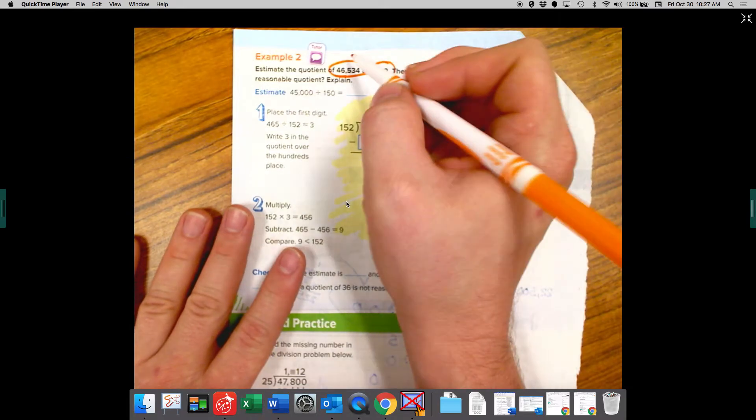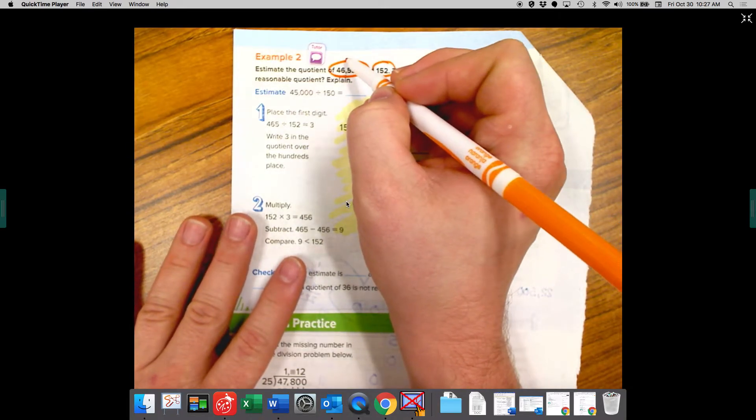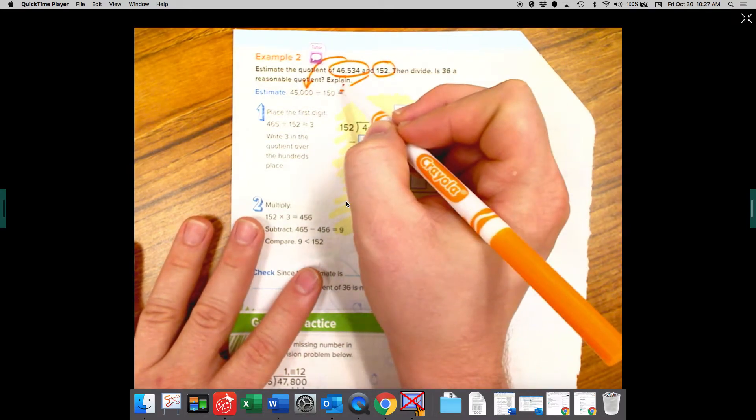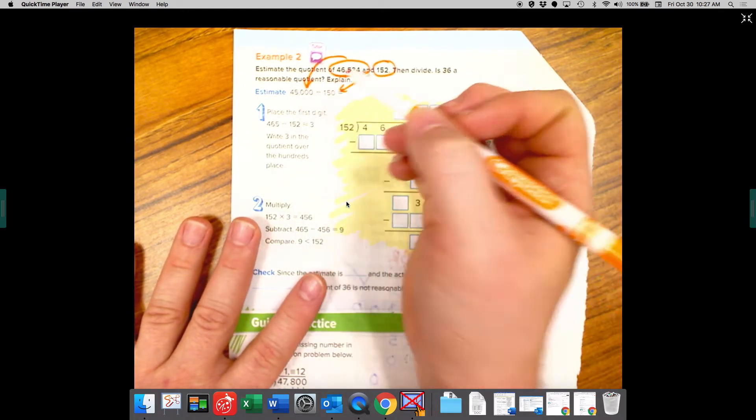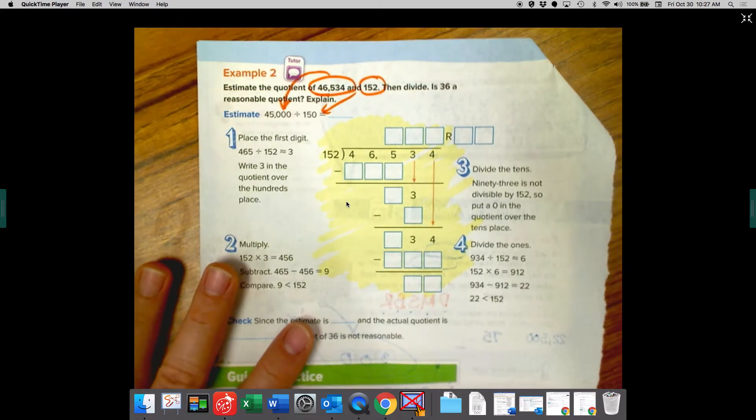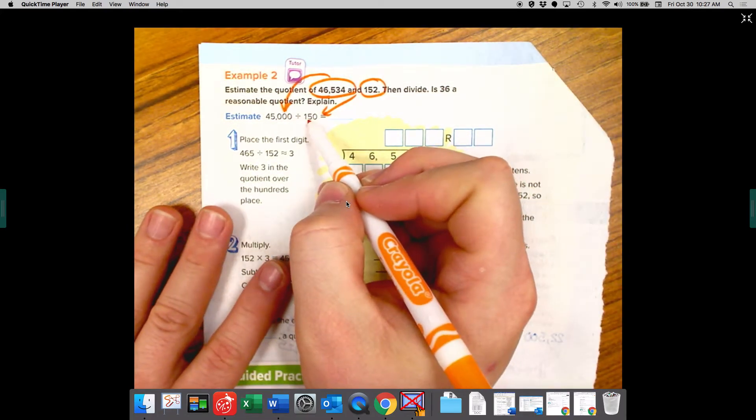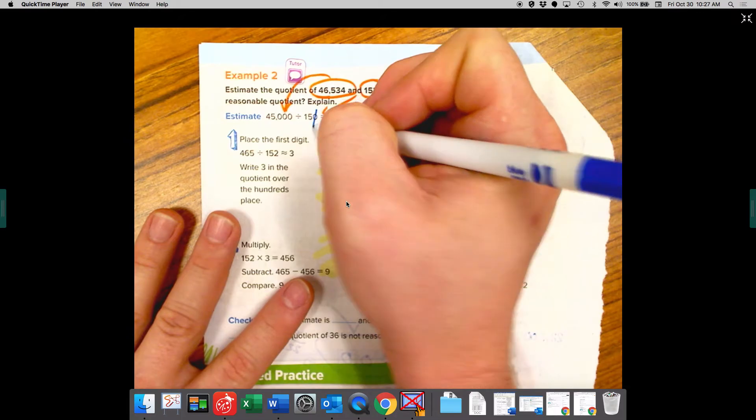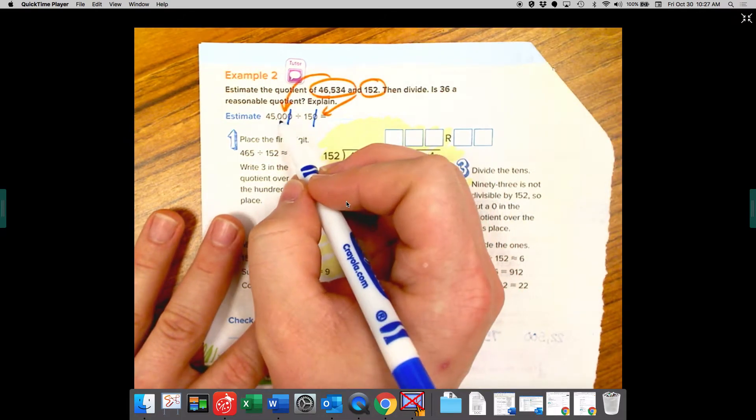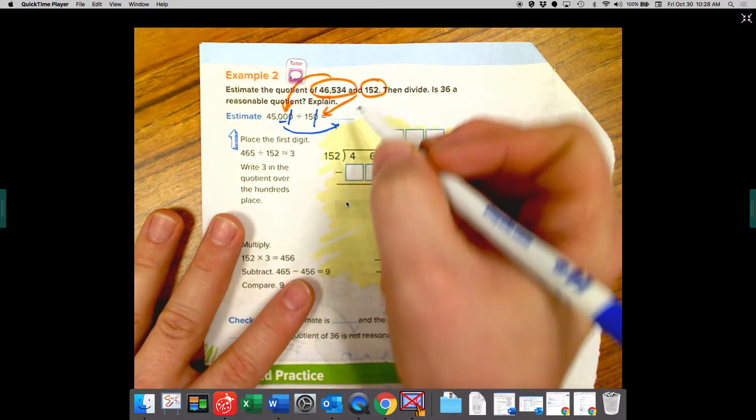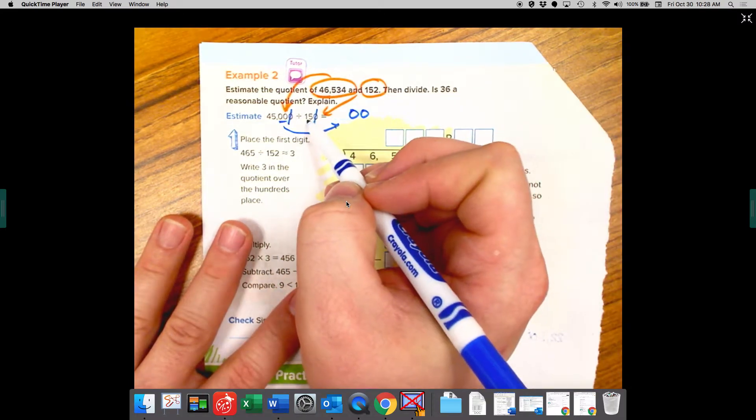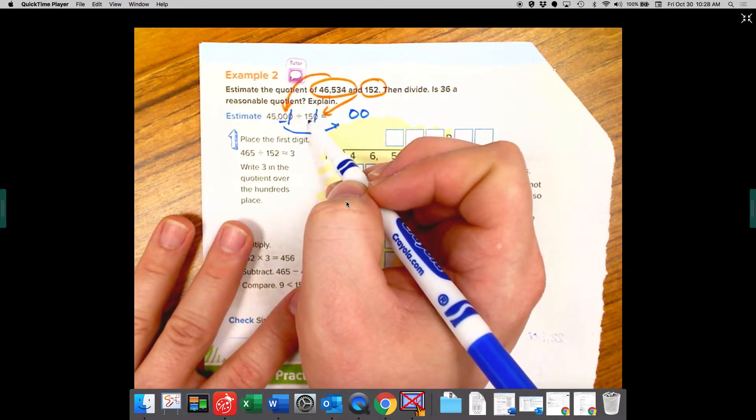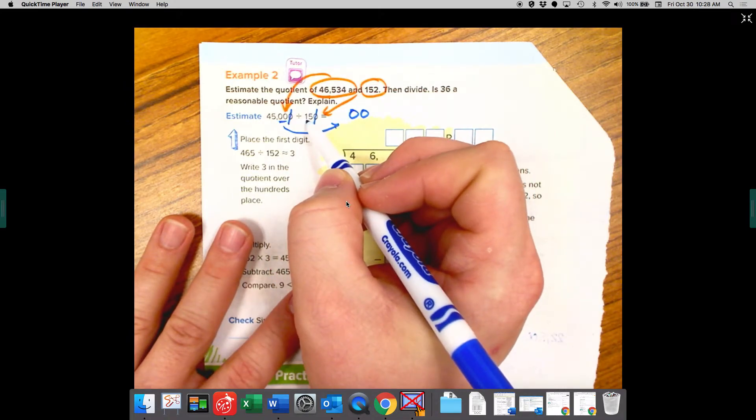So let's see. So they rounded 46,534 to 45,000, and they rounded 152 to 150 to make our job a little easier. They probably know that those numbers are compatible. So we just have to think how many times does 15 go into 45? We know if we have zeros in the dividend and divisor, we can cross out the same amount. So I can cross out this one and this one. These two are going to carry over to my answer. So let's put those there before we forget. Okay. So 15 times one is not 45. 15 times two is 30. That's not it either.